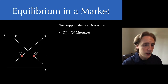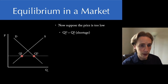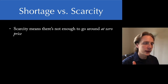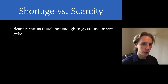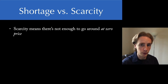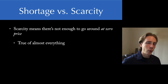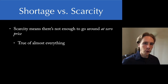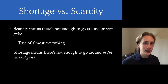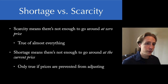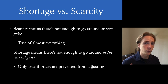A shortage in economics is not a normal situation, and shortage is not the same as scarcity. When we talk about scarcity, scarcity is omnipresent — everything is scarce, meaning there's not enough of anything to do everything we'd want if it were free. That's different from a shortage. A shortage means there are people who can't get what they need at the current price. Scarcity means there would be a shortage at zero price. Shortage means there's not enough at the current price, and we only see shortages if prices are prevented from adjusting and doing the work of coordinating people.